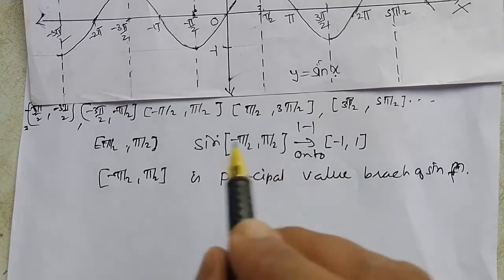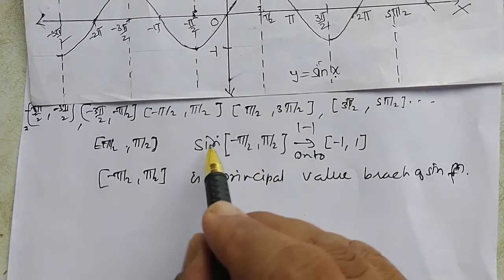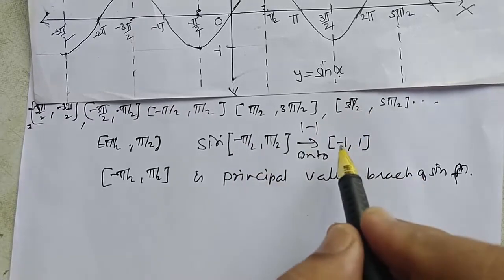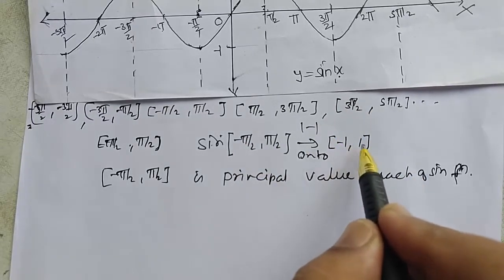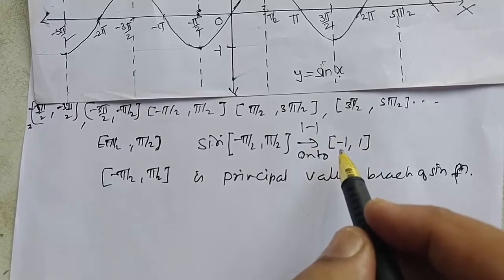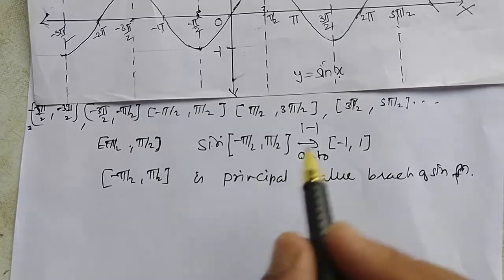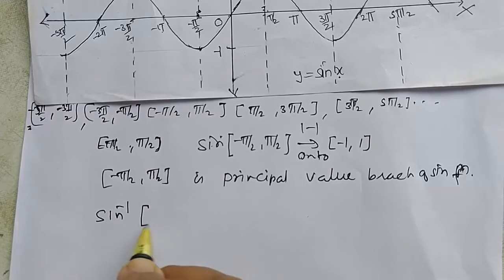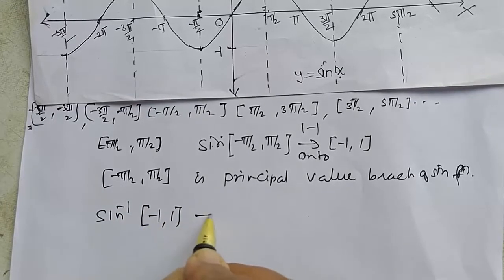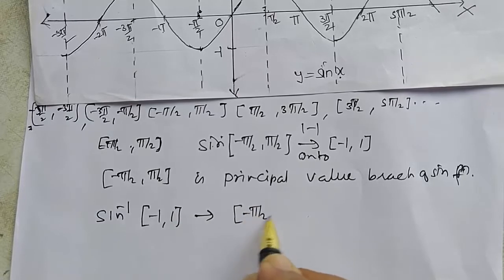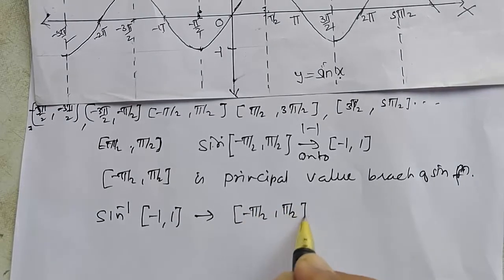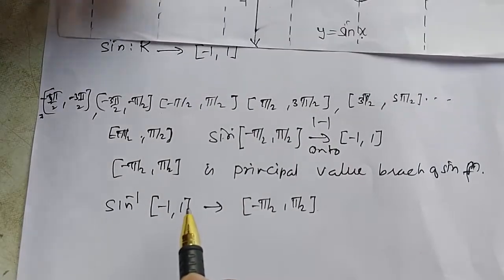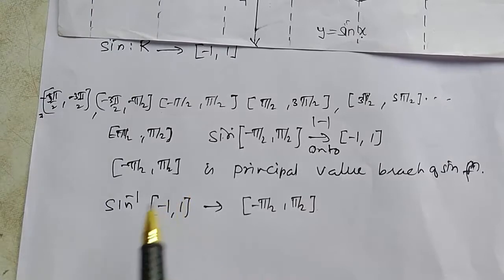Since the sine function from the closed interval [-π/2, π/2] to the closed interval [-1, 1] is one-one and onto, by the definition of inverse function, we define its inverse. The inverse is denoted by sin⁻¹, mapping from [-1, 1] to [-π/2, π/2]. In this way we define the inverse of the sine trigonometric function.